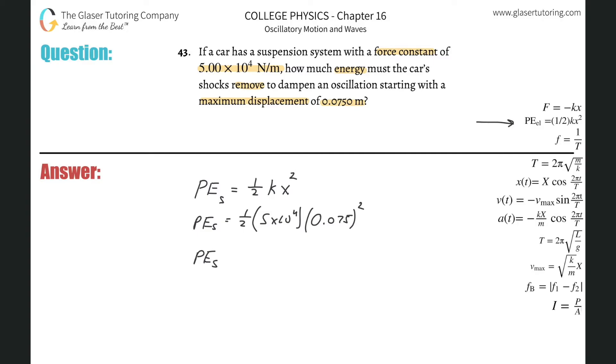And therefore now, I can simply calculate this: 0.5 times 5 times 10 to the 4th, times 0.075 squared. That's going to be about 141 joules, considering rounding.